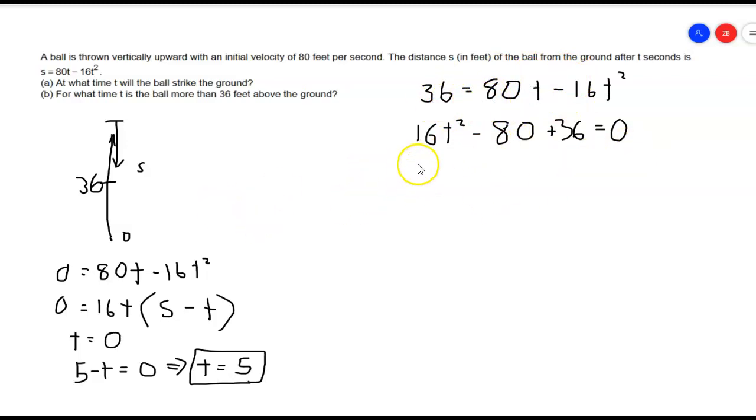It looks like I can factor a 4 out of there to make it a little bit easier, so I'll do that. I'll get 4 times 4t squared minus 20—oh, I forgot the t up here.